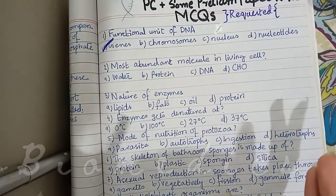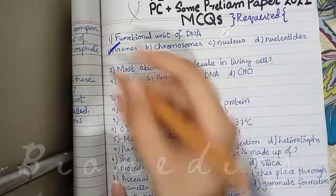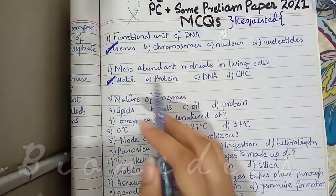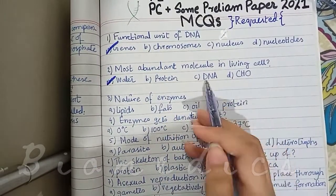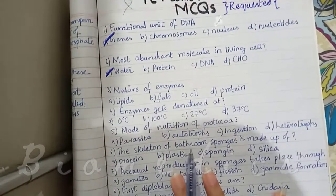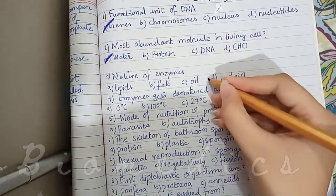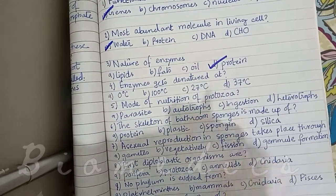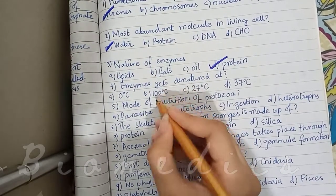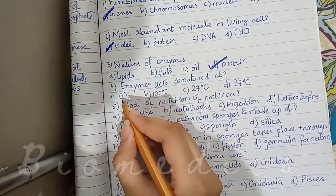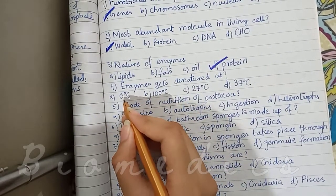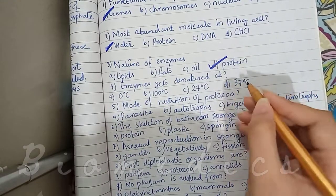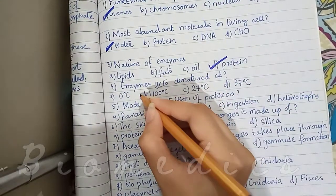The second question is: Most Abundant Molecule in a Living Cell. The most abundant molecule in the cell is water. After water, the most numerous are proteins, then carbohydrates, then DNA. The next question is: Nature of Enzymes. Enzymes are proteins, and they can be denatured. At 100 degrees Celsius and 0 degrees Celsius they are non-functional and denatured. At 37 degrees Celsius they show optimum activity — 100% activity.